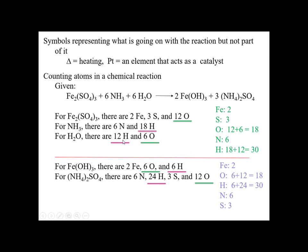Nitrogen is only in one place: six. Hydrogens appear in two places — 18 from ammonia and 12 from water, so 18 plus 12 gives me 30. Those are the atom counts for the reactant side of the balanced equation. Moving to the product side, the coefficient times subscript rule still applies: for iron it's two times one is two irons. With parentheses in iron(III) hydroxide, two times three times one gives me six oxygens, and two times three times one gives me six hydrogens.